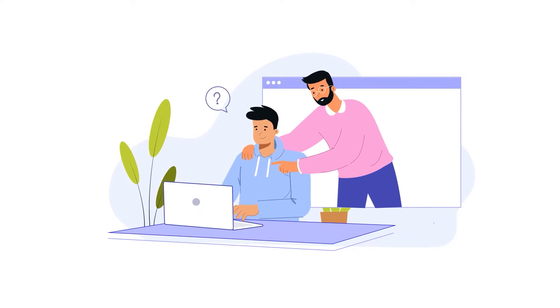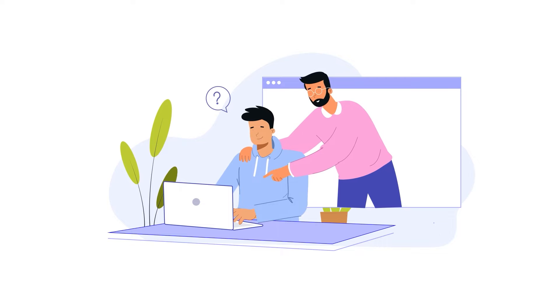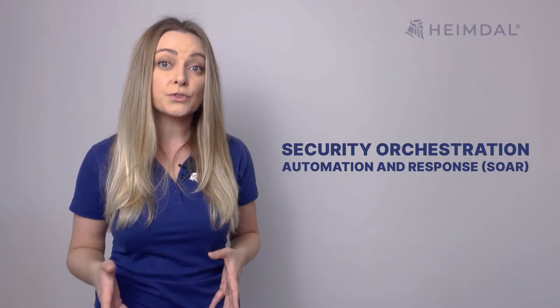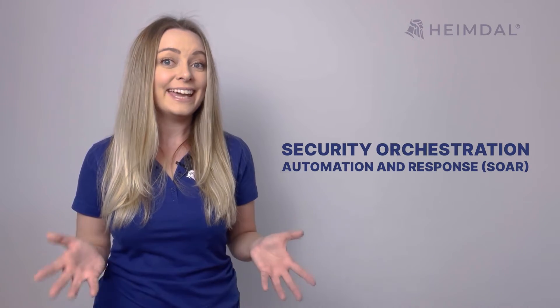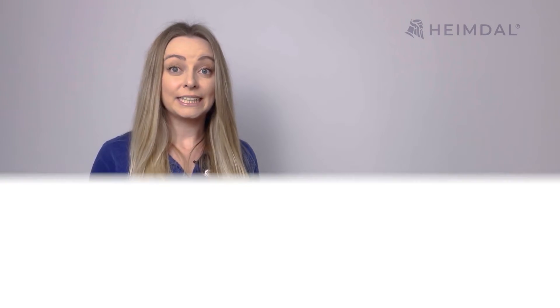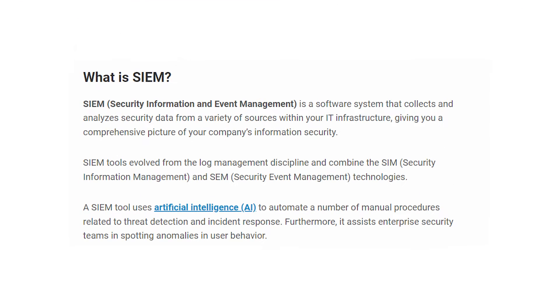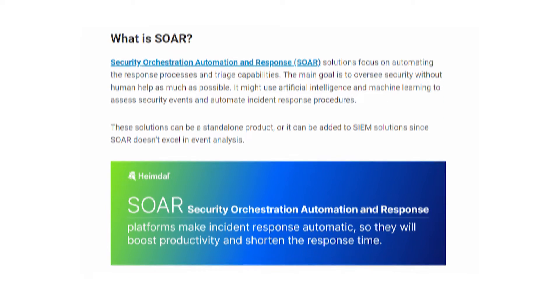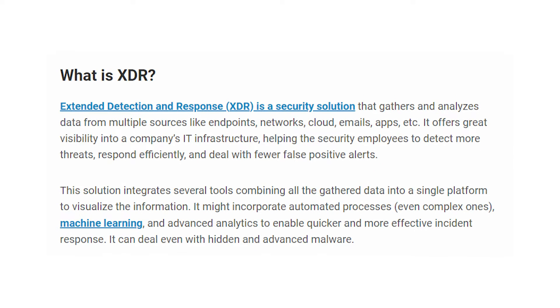Today, IT teams have the option to choose from a range of technologies such as Security Information and Event Management, Security Orchestration Automation and Response, and Extended Detection and Response. They all share similar definitions, but each comes with its own set of unique features and challenges. Let's discover together what they offer and how they differ to help you decide which to implement in your organization.